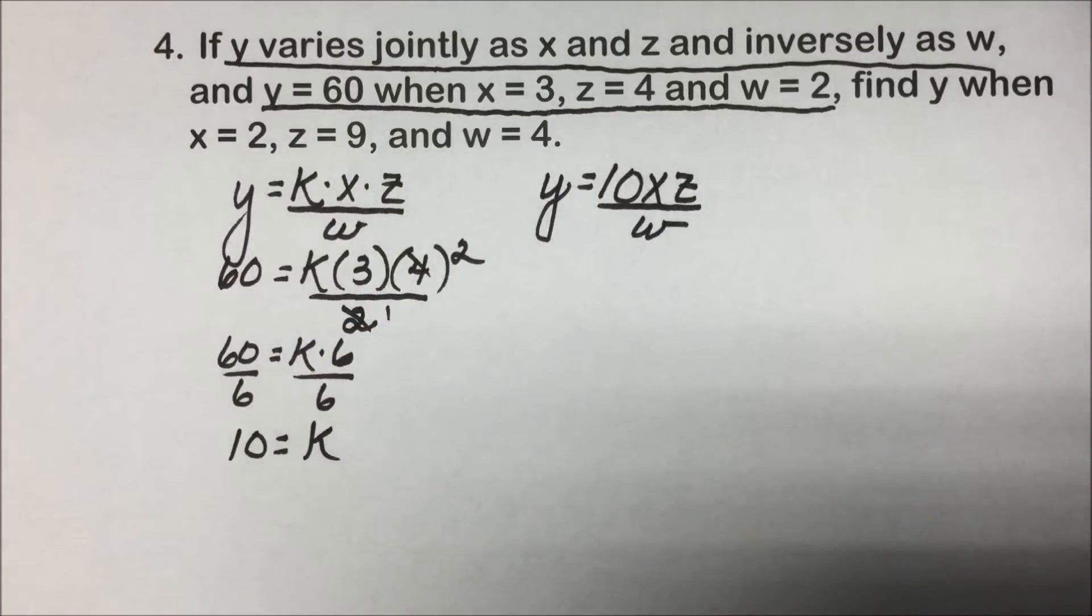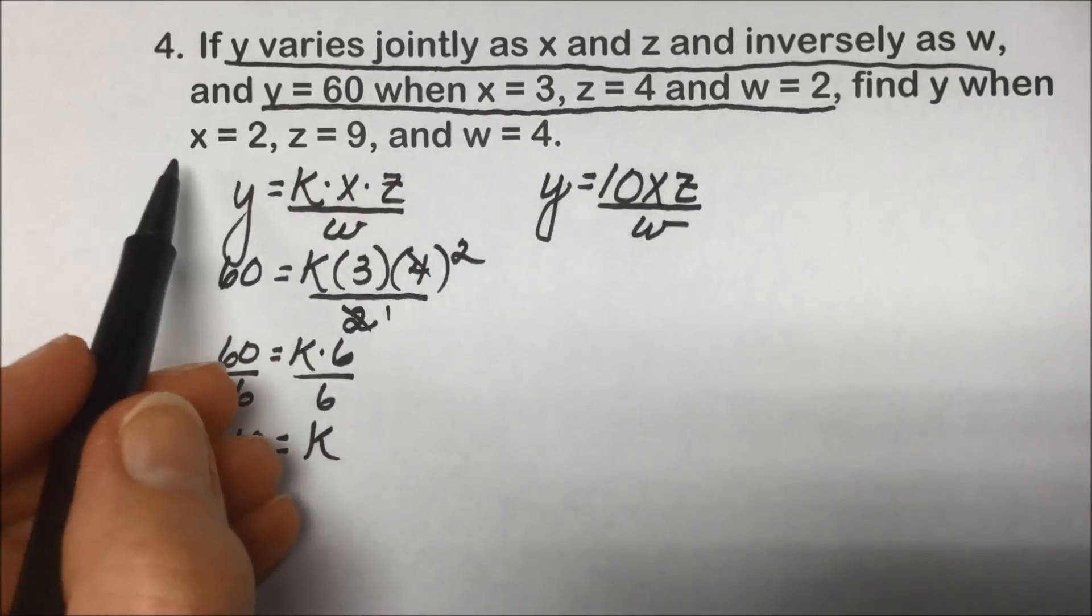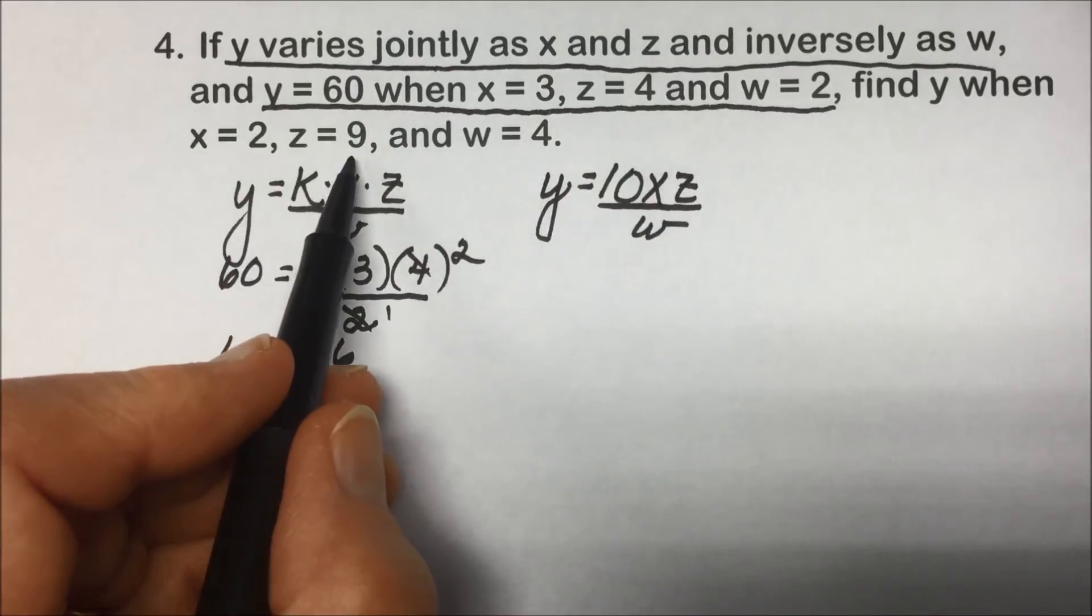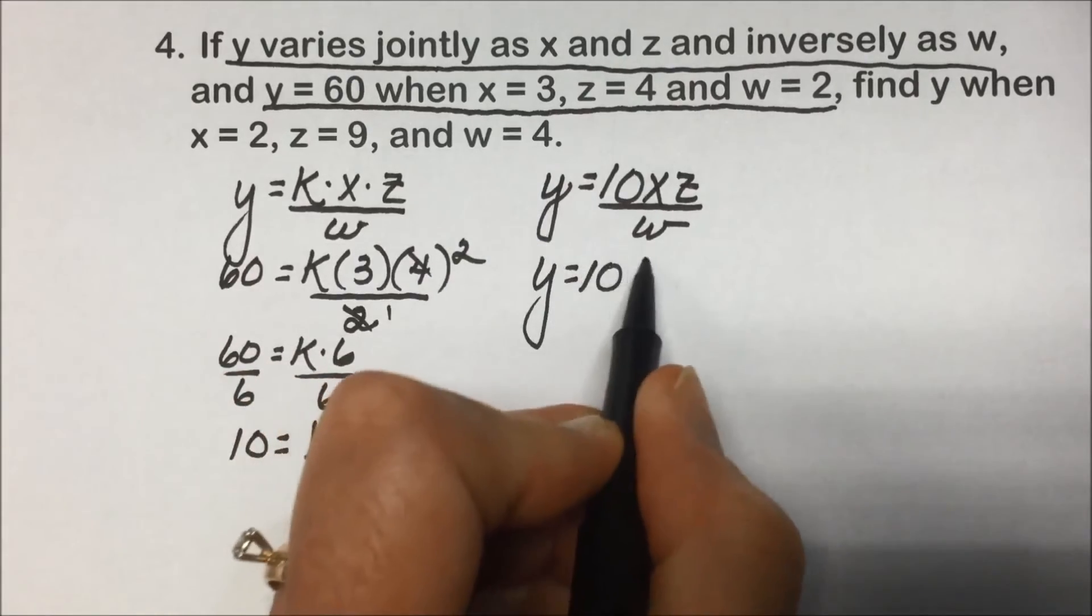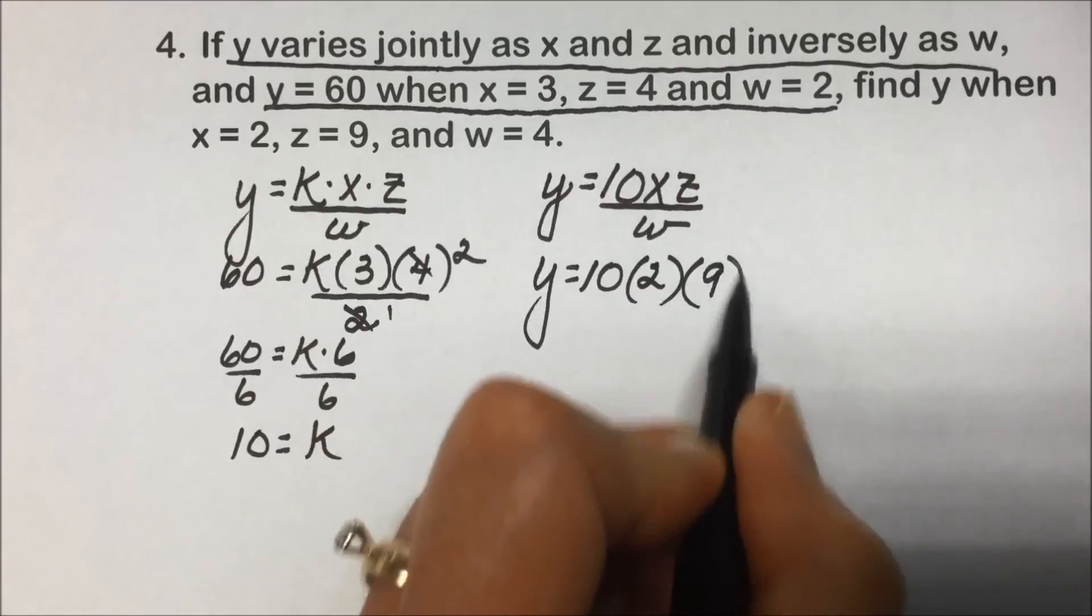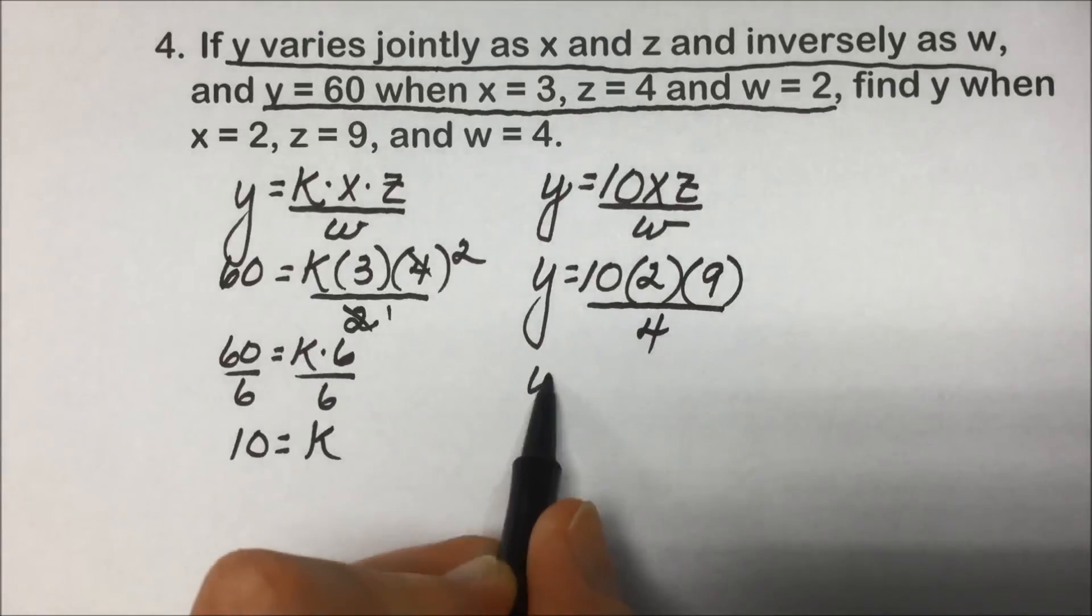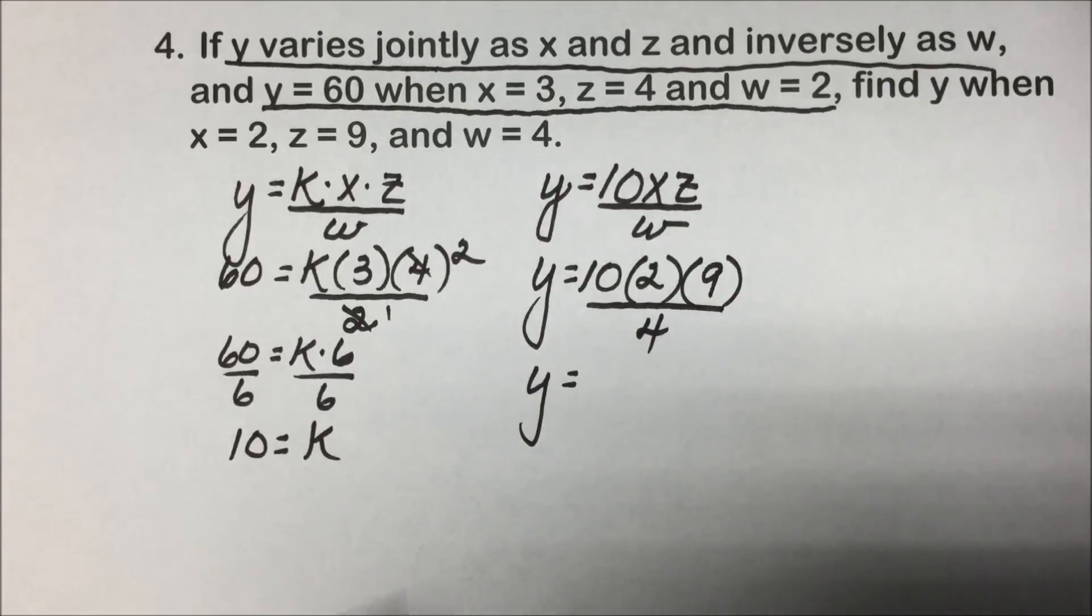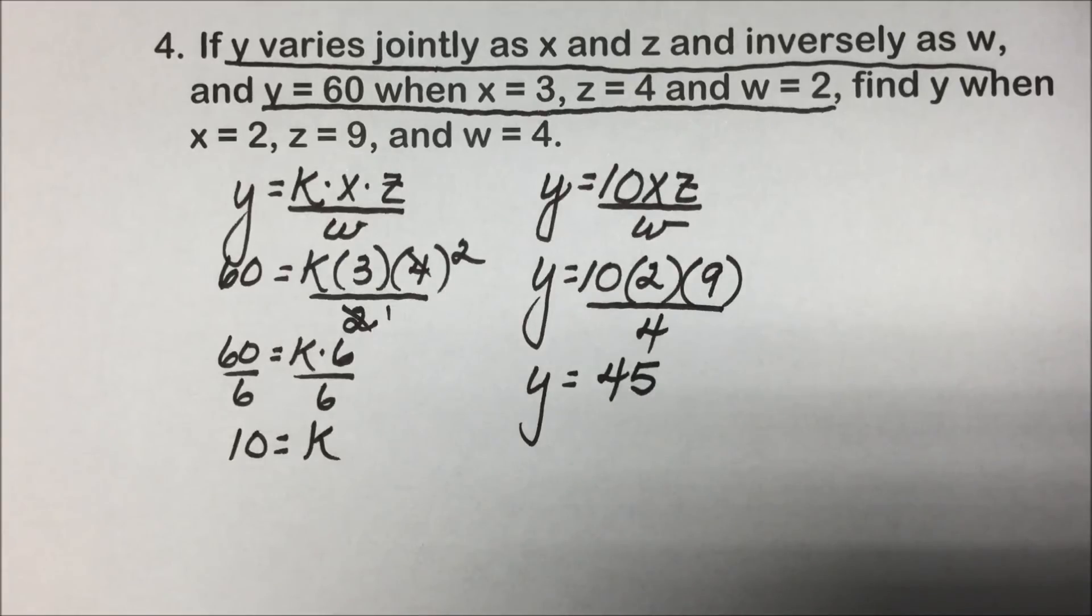That allows us now to go to the final step to solve for the variable that we're looking for. Find Y when X is 2, Z is 9, W is 4. So Y will be equal to 10 times X, which is 2, Z which is 9, and W which is 4. Doing the multiplication and division results in a value and a solution for Y of 45.